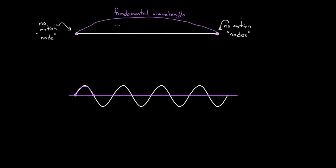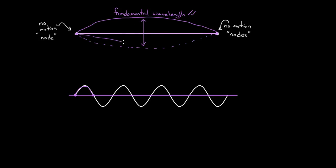These are called standing waves because this peak no longer moves left or right — it just moves up and down. We often draw a dashed line underneath that mirrors the bold line, because all this peak does is go from top to bottom, then back to top. It looks like a jump rope, but it's not revolving — it just moves up, then down, then up, then down. We call it 'standing,' though it's more like dancing. The peaks don't move right or left.